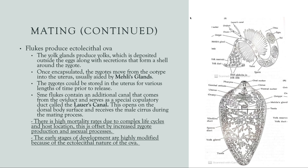Continuing on mating, flukes produce ectolecithal ova. The yolk glands produce yolk, which is deposited outside the eggs along with secretions that form a shell around the zygote, which I showed in the diagram before. Over here you have the zygote and the hard shell around it. Once encapsulated, the zygotes move from the ootype into the uterus, which is usually aided by Mehlis's glands, which you can see down here in the male fluke — this tiny little thing right here.